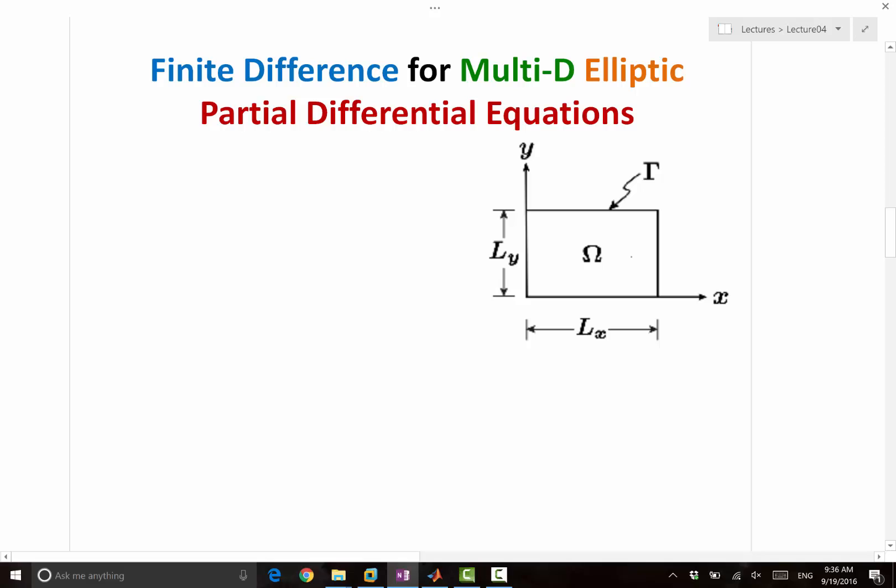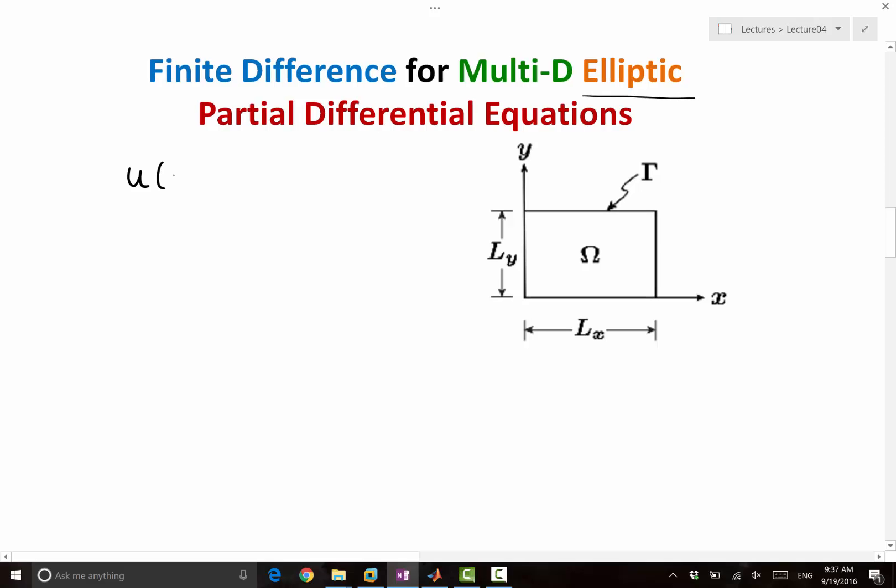So, in this case, the omega is just a rectangle. Our solution, the reason I have said elliptic, is because we are considering the case where there is no time. We are just considering a function u of x and y. And let's say we want to solve this equation in the simplest form: partial square u partial x square plus partial square u partial y square equal to f of x and y.